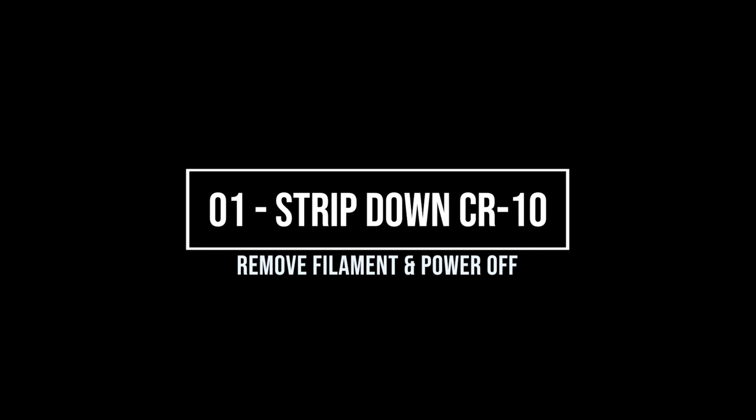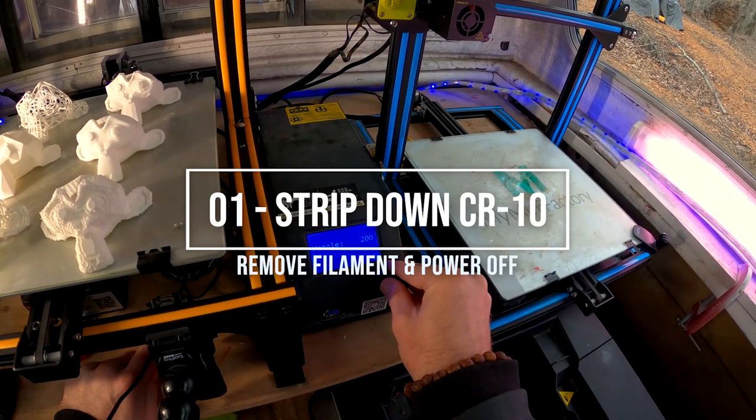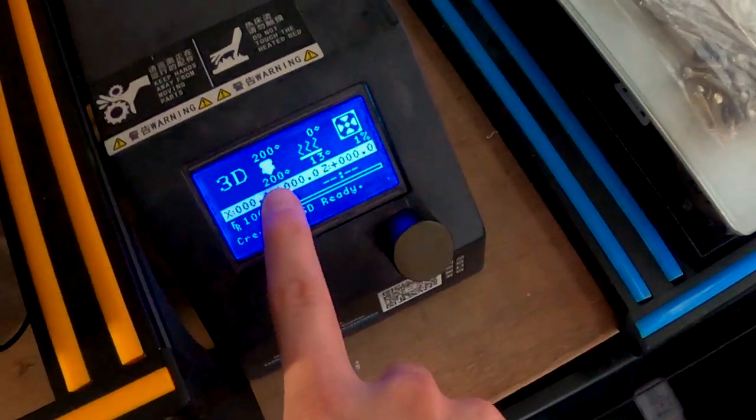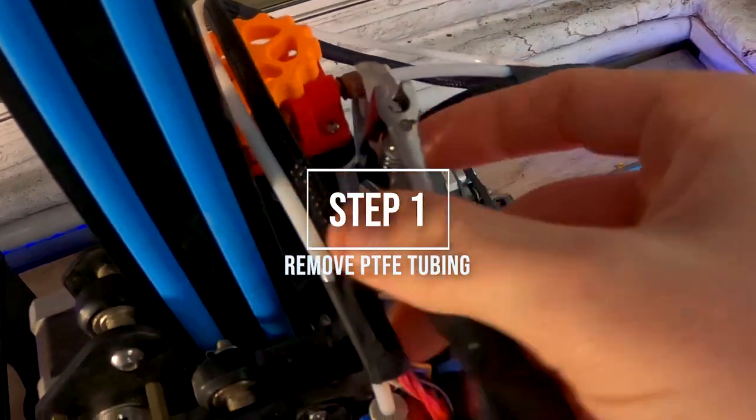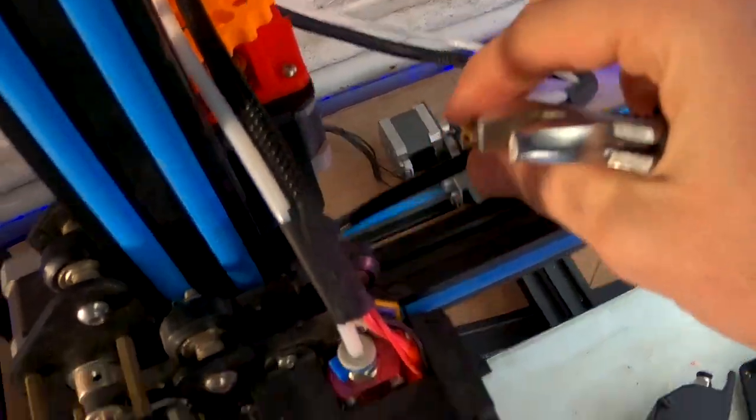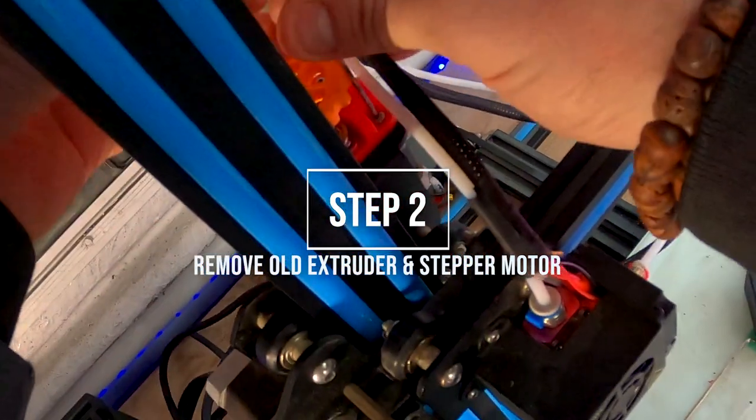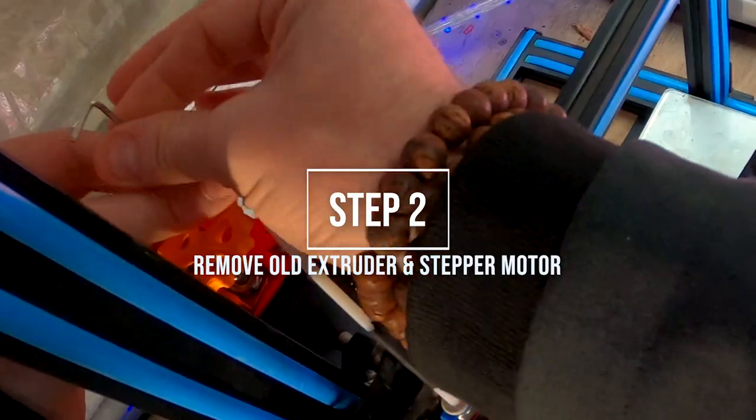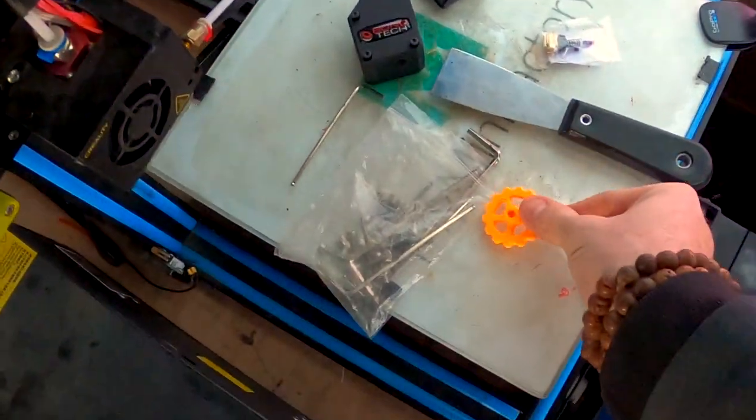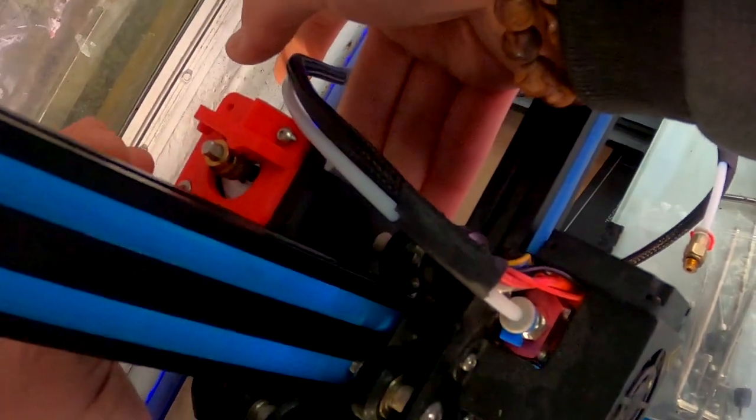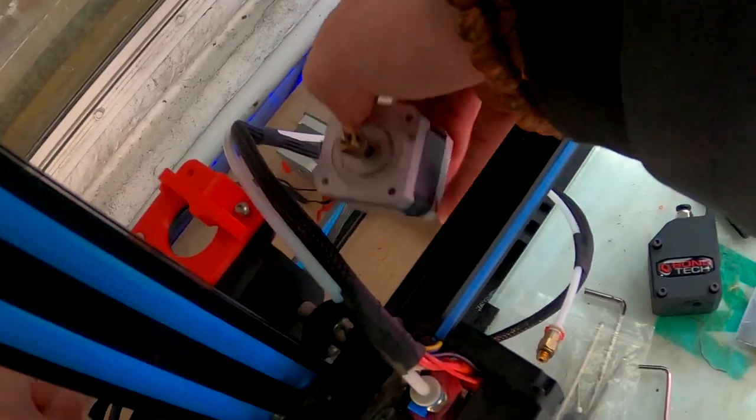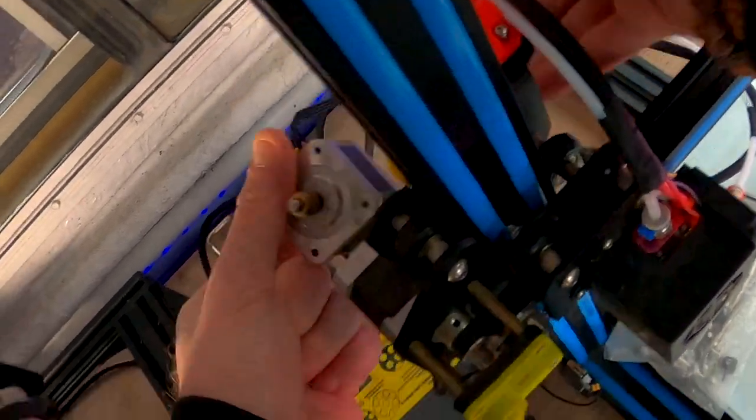And now the fun part, stripping down the CR10 and add the new gear. So go ahead and heat it up. Take out the filament. There you go. And just unplug that bad boy and remove that tubing. Just like that. Next step, remove that old extruder that you don't need anymore. We're going to unscrew all the screws and take it off. Take off the lever. Take off that spring. Take it all away. And make sure your stepper motor doesn't drop. Keep a little hand under there.